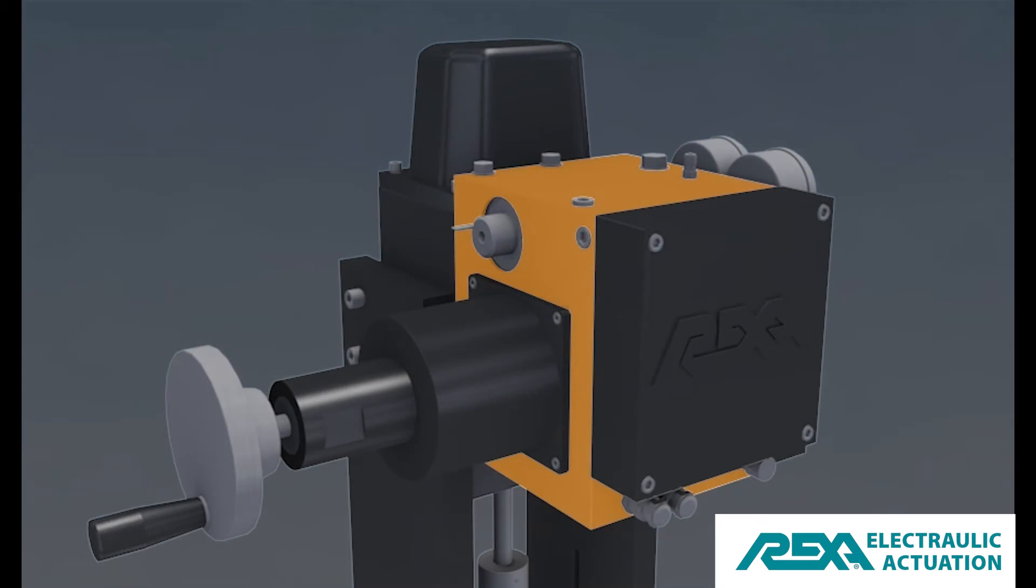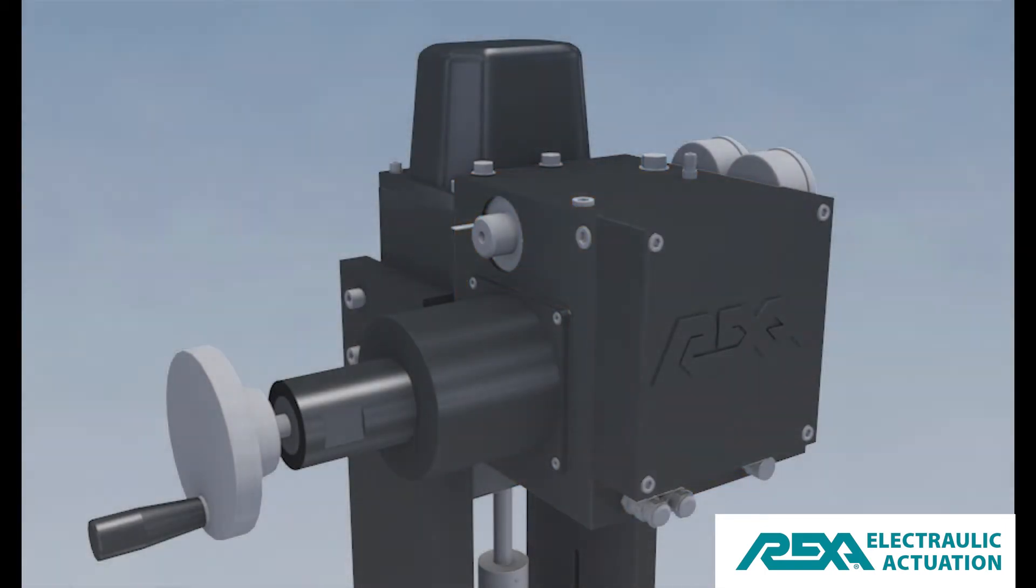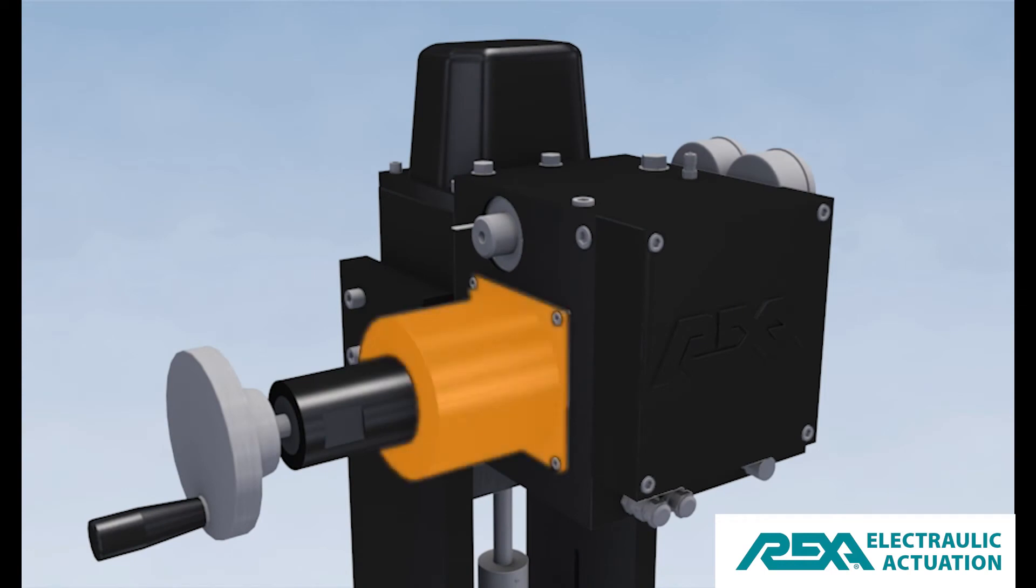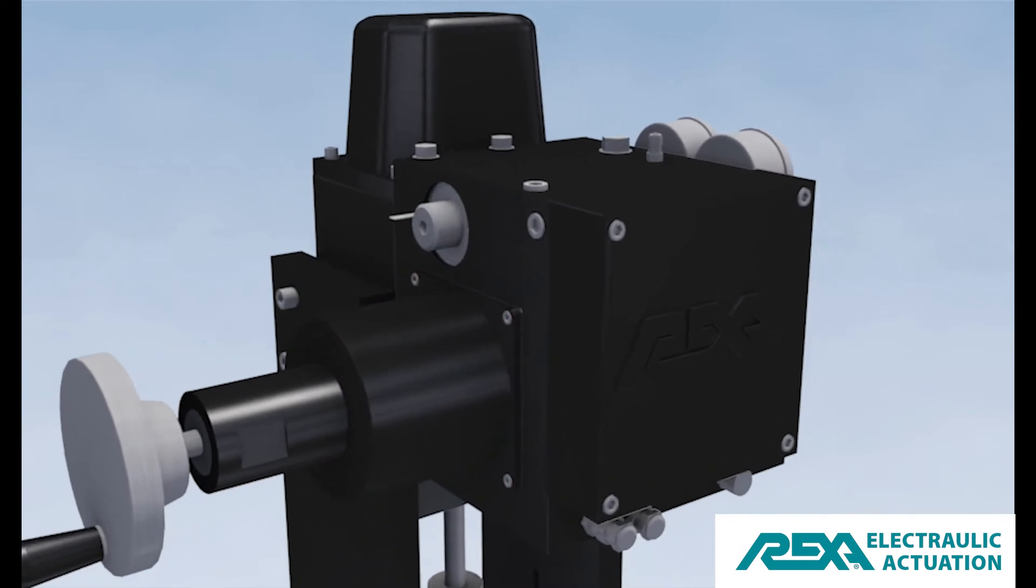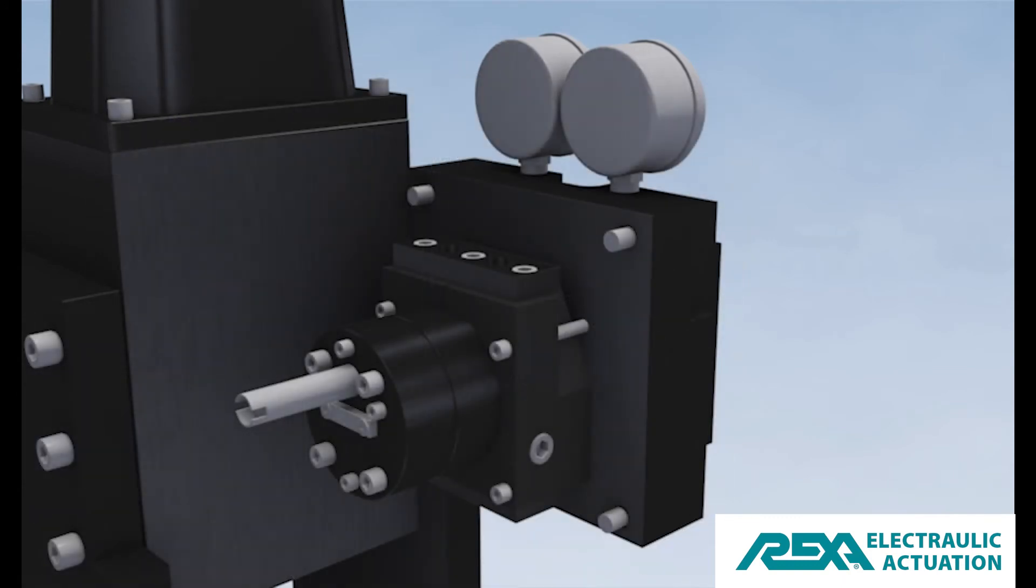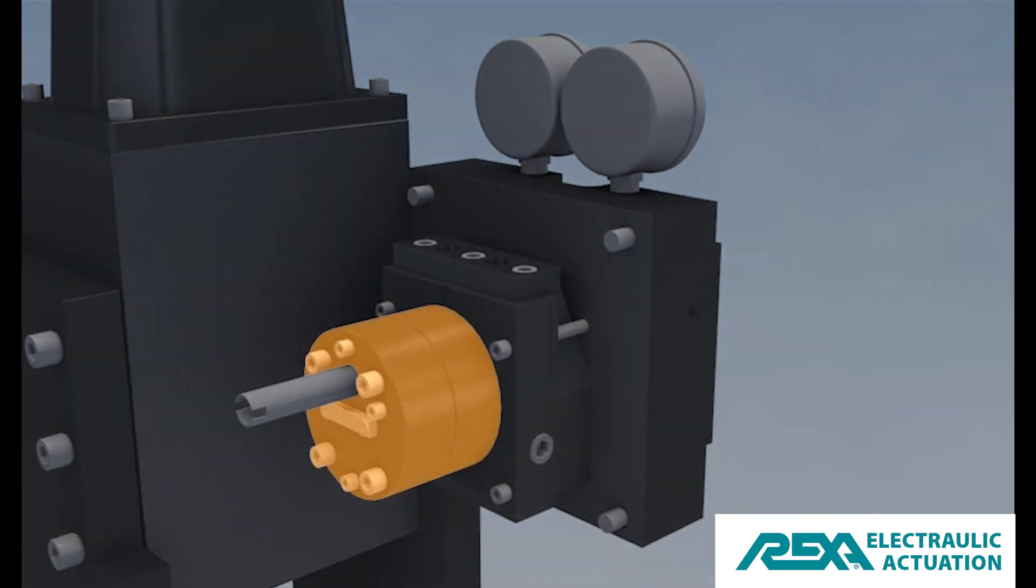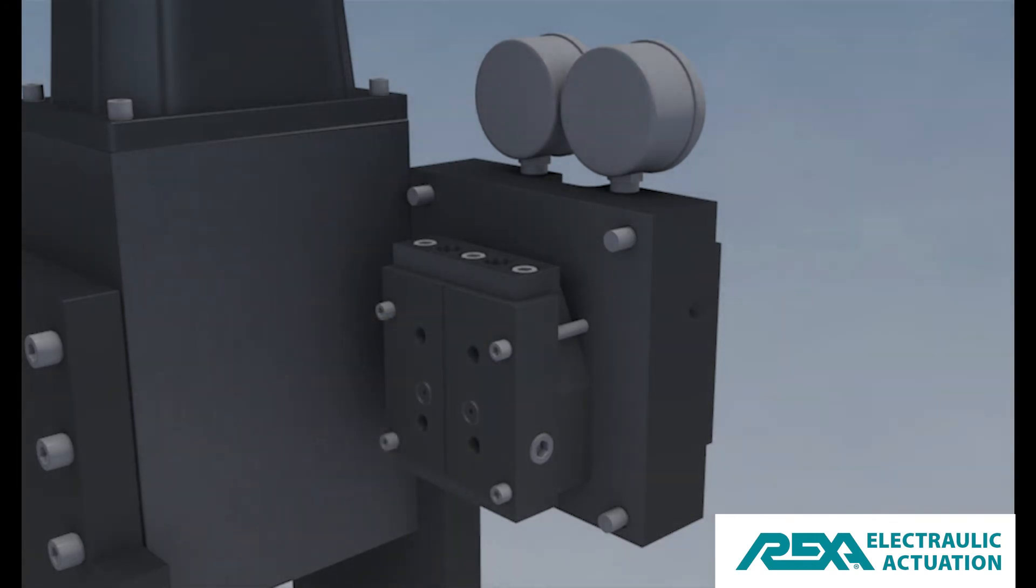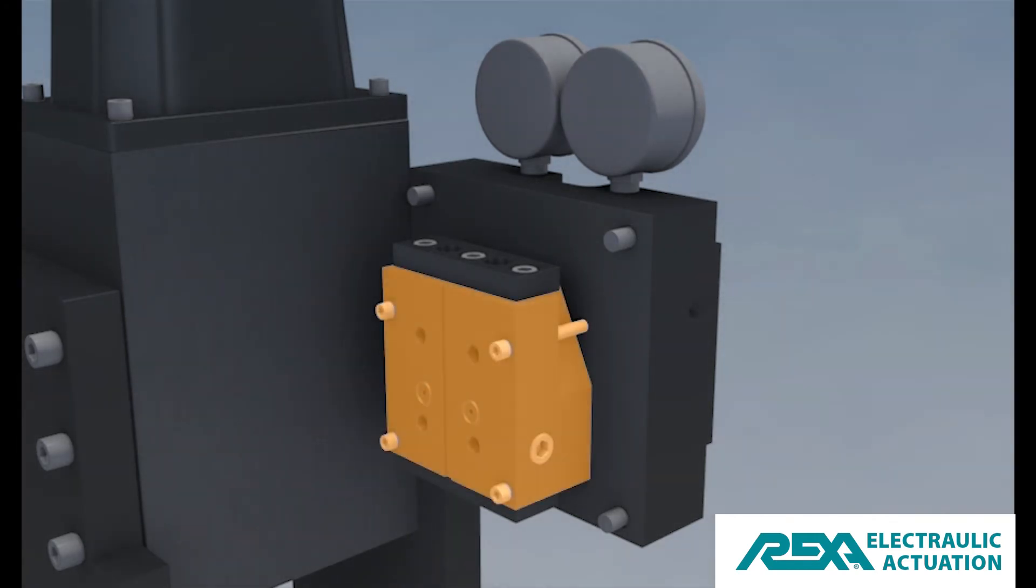The power module is the main component of the actuator. It contains the motor, gear type hydraulic pump, and the flow match valve assembly.